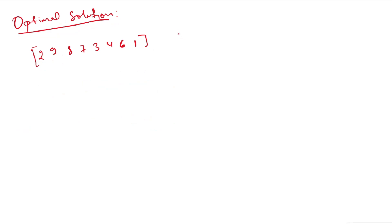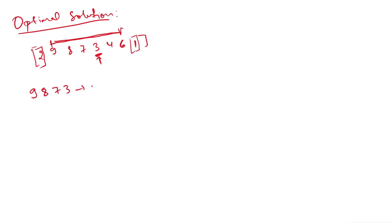Before moving to this solution, you first need to know about the Next Smaller Element problem — both to the left and to the right. If you don't understand that, I recommend watching that video first. For element 3 in our array, we find the next smallest element to its left and the next smallest element to its right.